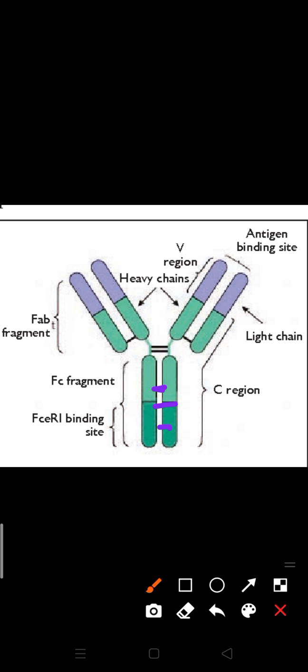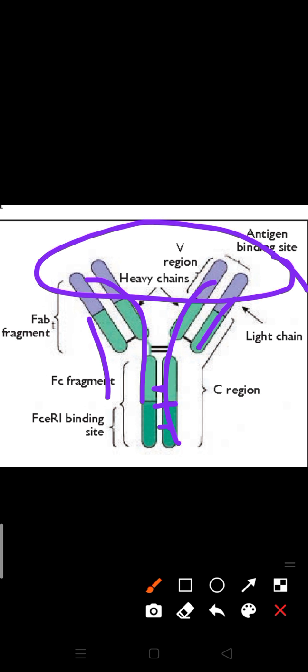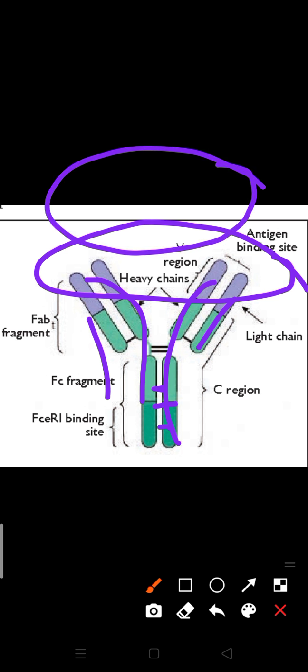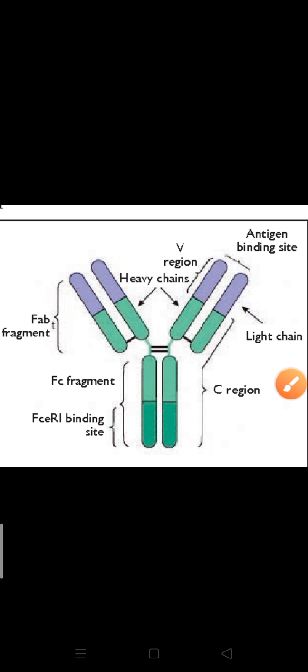Antibodies have heavy chains and light chains. The longer chains are known as heavy chains and the shorter chains are known as light chains. Most antibodies are Y-shaped. Heavy chains have more molecular weight and light chains have less molecular weight.